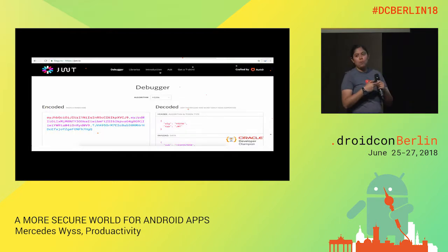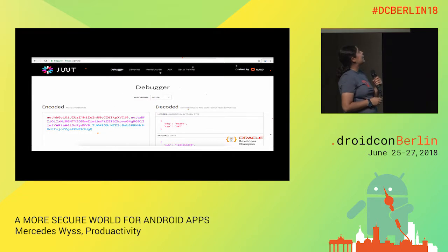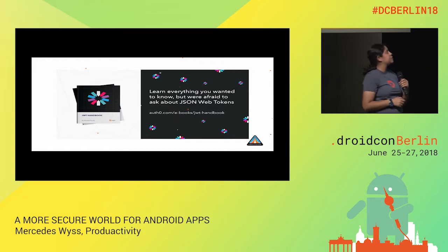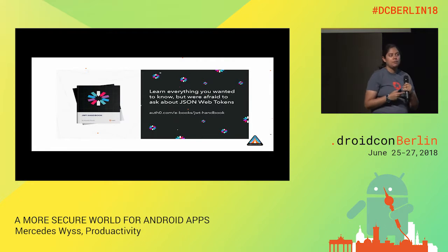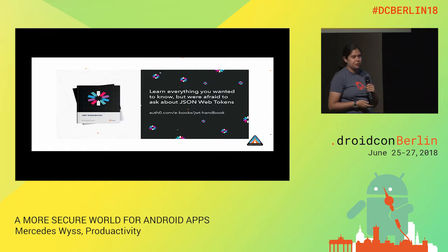To learn more about JSON Web Tokens and how to implement them, visit JWT.io — and I recommend the handbook by the Auth0 team, which explains everything including how to use JWT for federated identities and has a chapter on JSON Web Encryption.